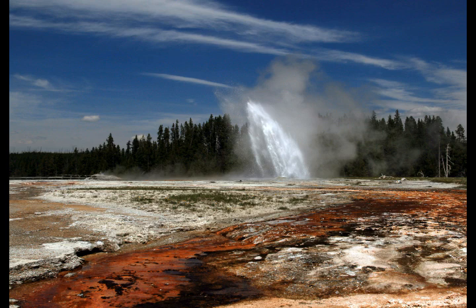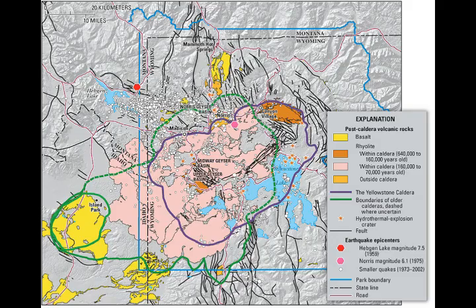We know that Yellowstone has over 60% of the world's geysers and over 10,000 hydrothermal areas. Earthquake swarms are a natural part of what's going on in Yellowstone.